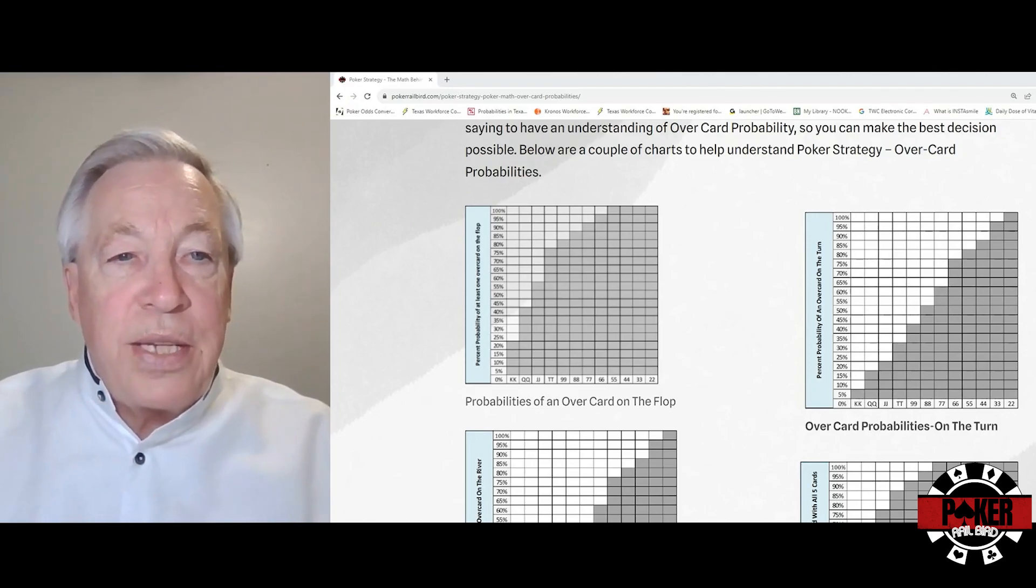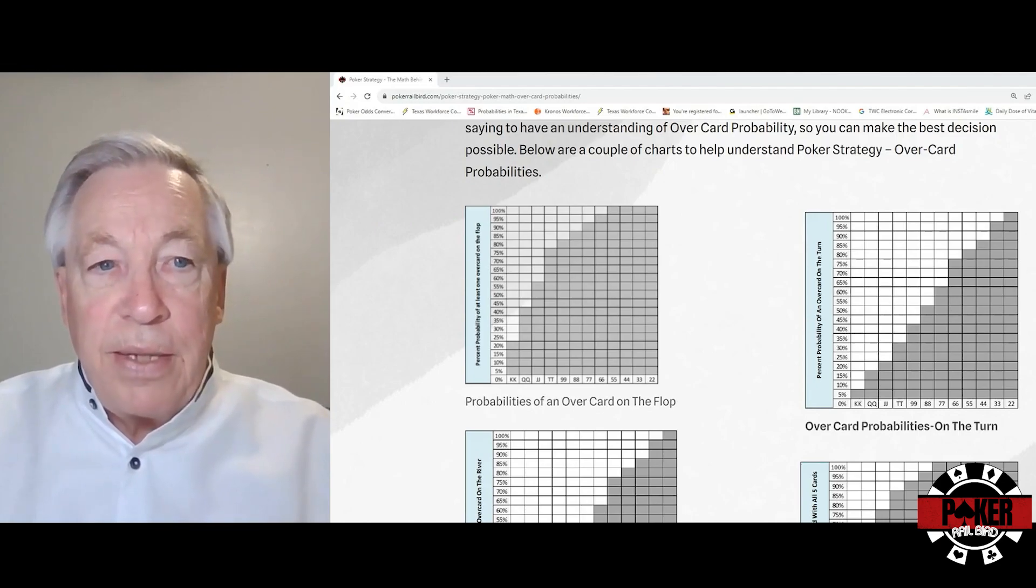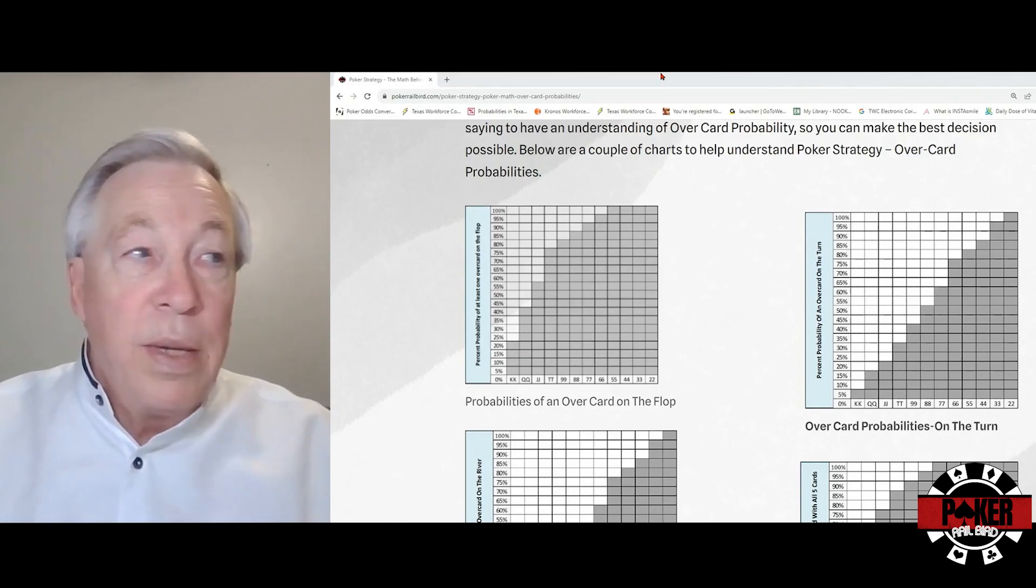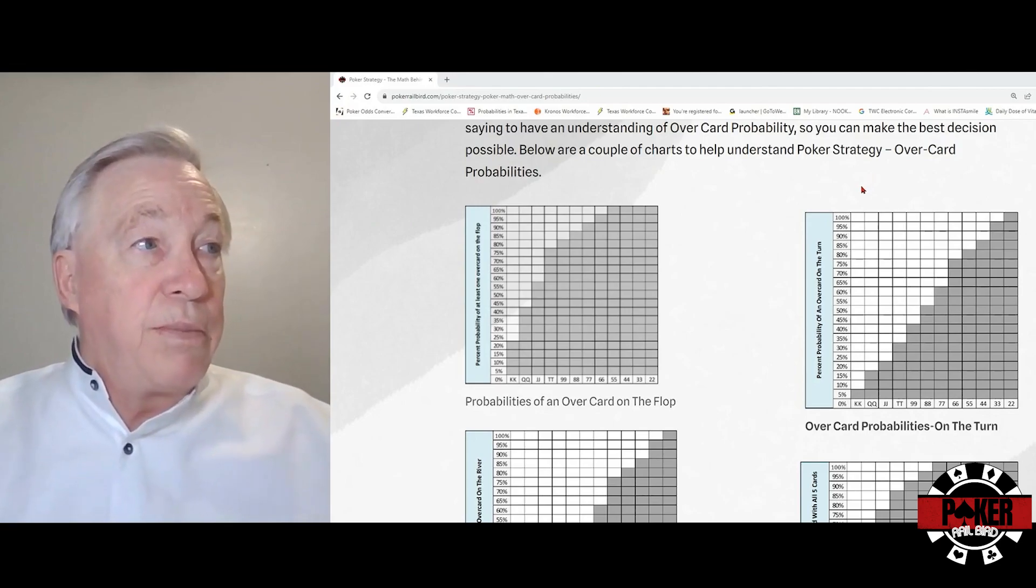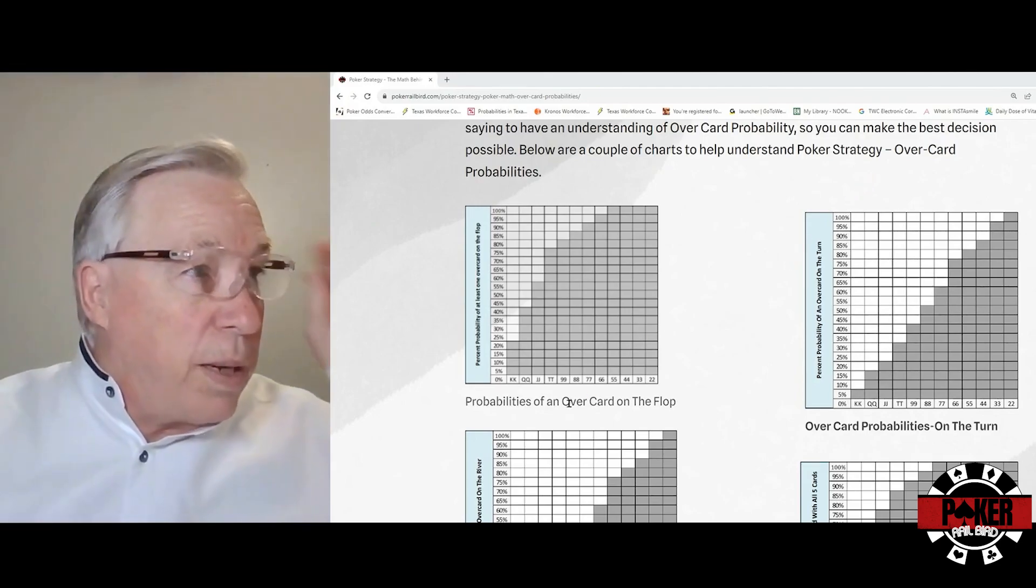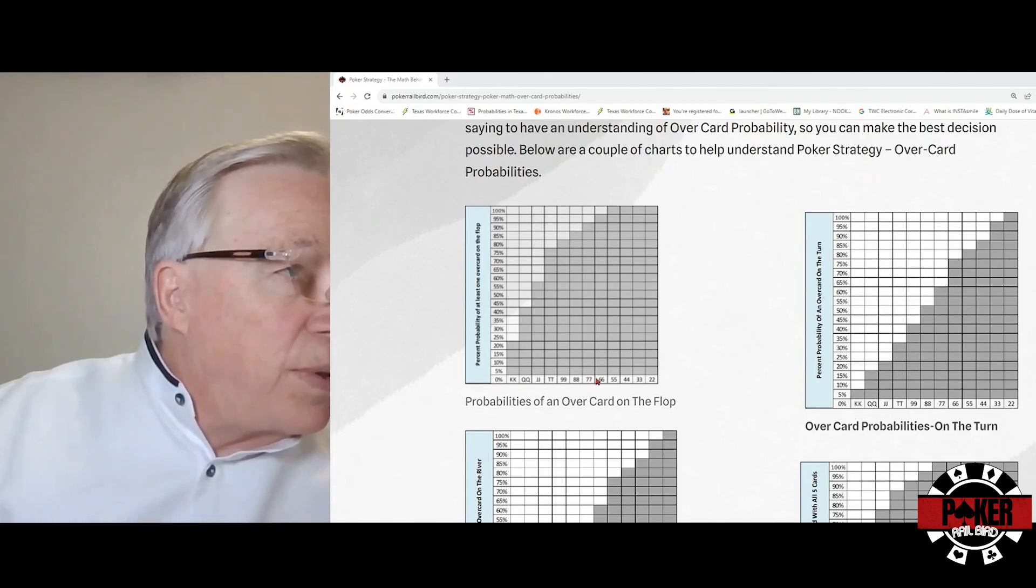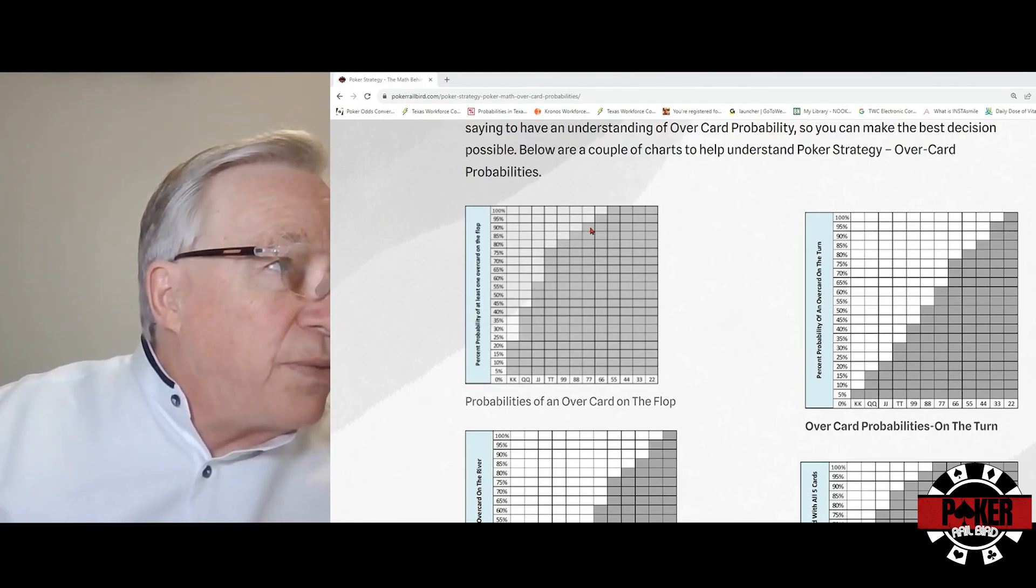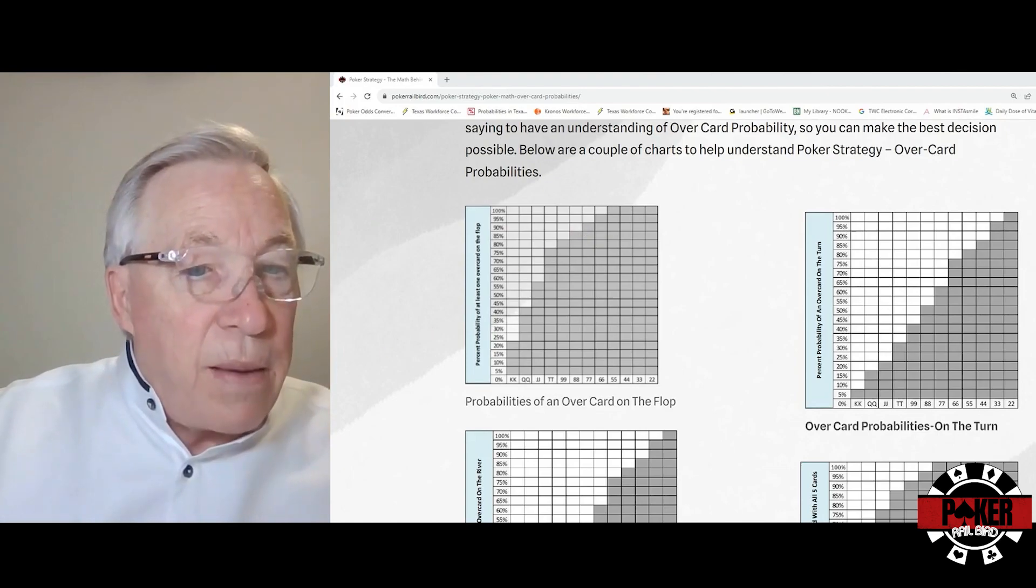So now that we know where we stand, what about the flop, which of course changes everything? What's the probability of an overcard to your sevens coming on the flop? Well, there's about a 90 percent probability that an overcard would come. If we go over to the sevens here and go up, this is the flop chart - 90 percent chance of an overcard on the flop.